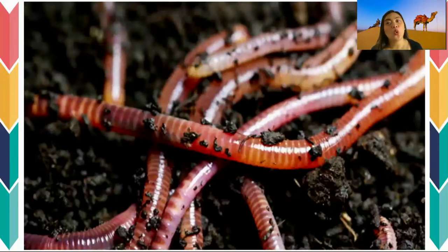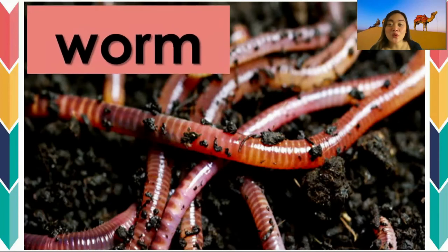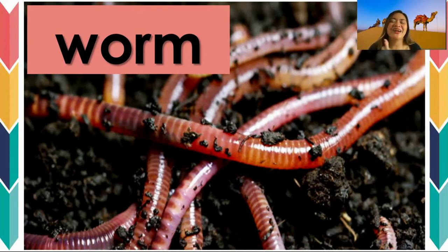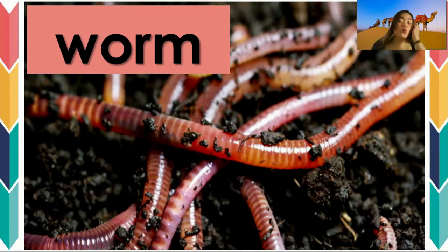This is kind of disgusting, but do you know what animal is it? It's a worm. It is a worm. Have you seen a worm before? How do you spell worm? Let's spell it out: W-O-R-M. Worm.